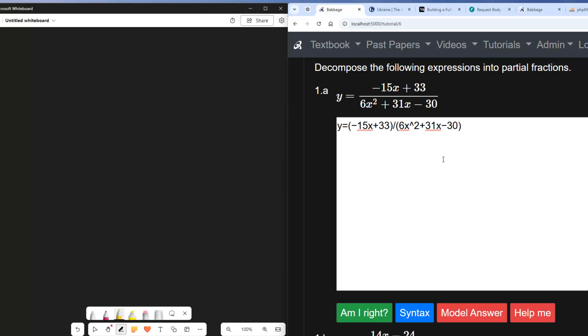So step two is to factorize the denominator. So let's have a look at how we do that. So it's 6x² + 31x - 30, and that's going to equal two brackets. First of all we'll do it by inspection.